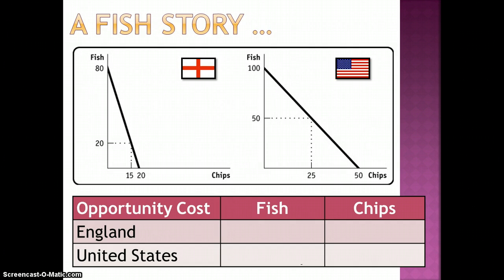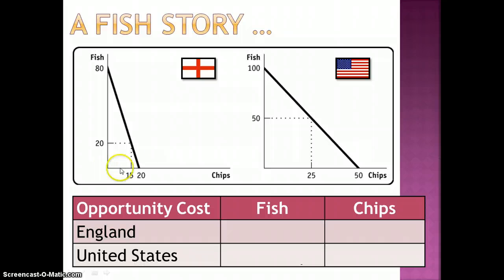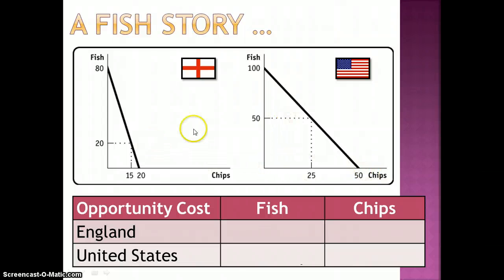Let's look at a fish and chips example. England can create 80 fish and zero chips, or 20 chips and zero fish, or some combination in between. The US can produce 100 fish and no chips, or 50 chips and no fish. These represent our two production possibilities curves and every combination in between.